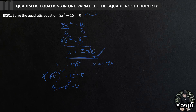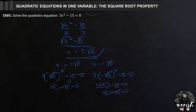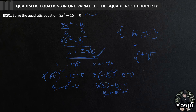Next, for x equals negative square root of 5: we have 3 times negative square root of 5 squared minus 15 equals 0. The square root of 5 squared cancels to 5, and negative times negative is positive, so this is 3 times 5 minus 15 equals 0, giving us 15 minus 15 equals 0. Another true statement. So we can confirm the solution set is negative square root of 5 and positive square root of 5, or written as plus or minus square root of 5. This is the answer for example number 1.